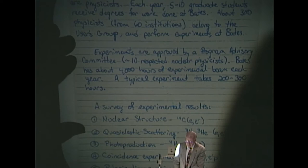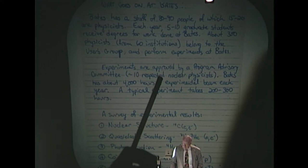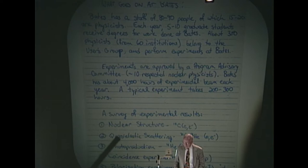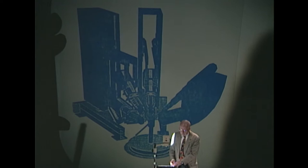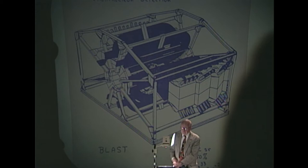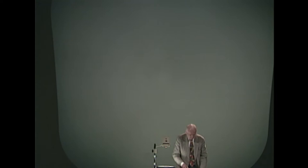What goes on at Bates? It has some 80 to 90 people. Experiments are approved by a program advisory committee. A typical experiment takes 200 to 300 hours. And the breadth of physics is just mind-boggling. Nuclear structure work, quasi-elastic scattering, photo production, coincidence experiments, polarization experiments. Just a breadth of superb physics. And then the LINAC and its staff continue to run. They have a proposal in the works for a BLAST 4π detector, which would certainly enable them to really use the capabilities of the South Hall ring.